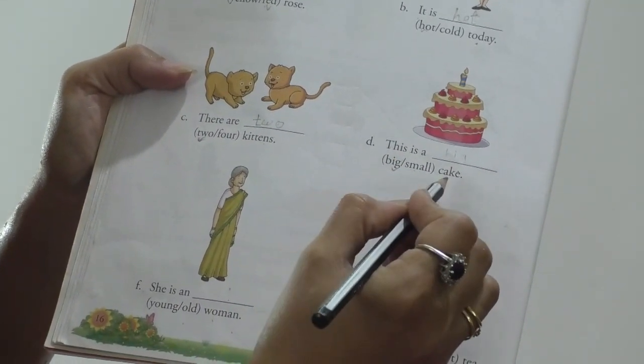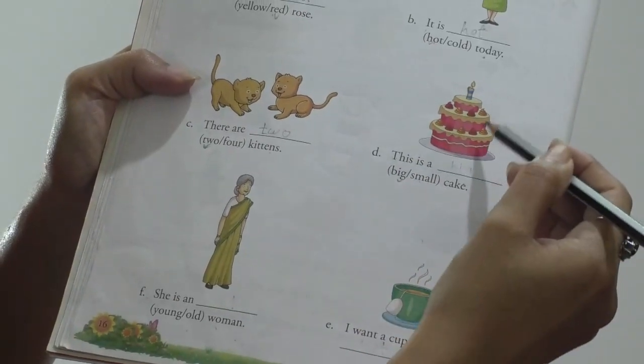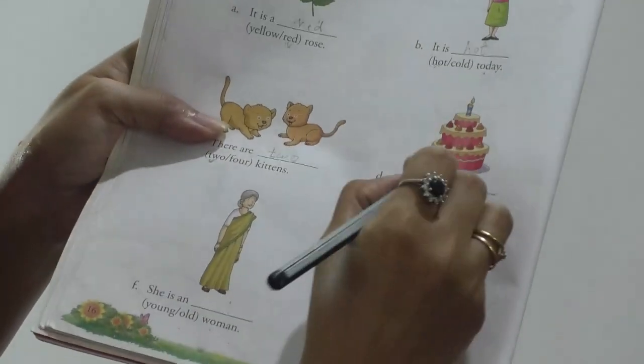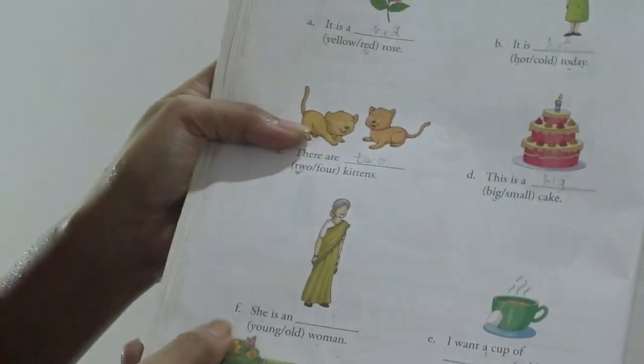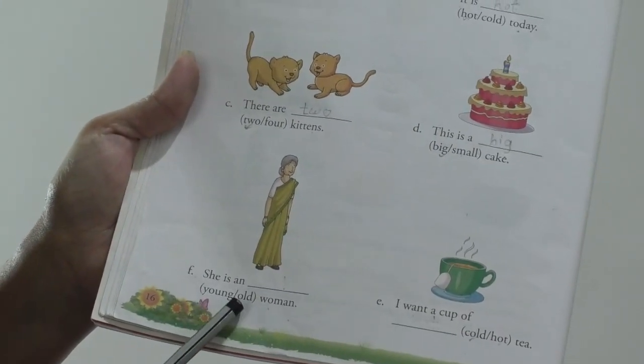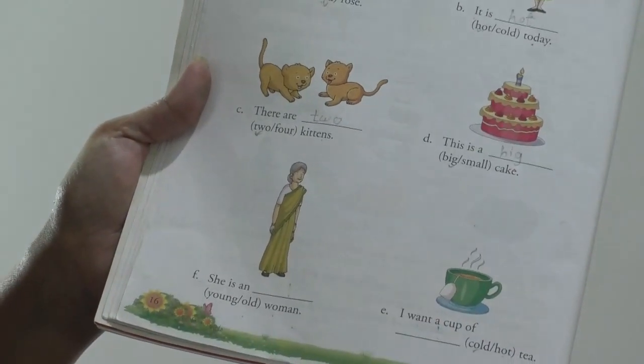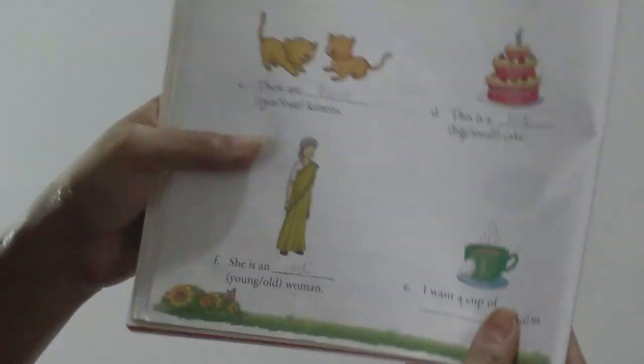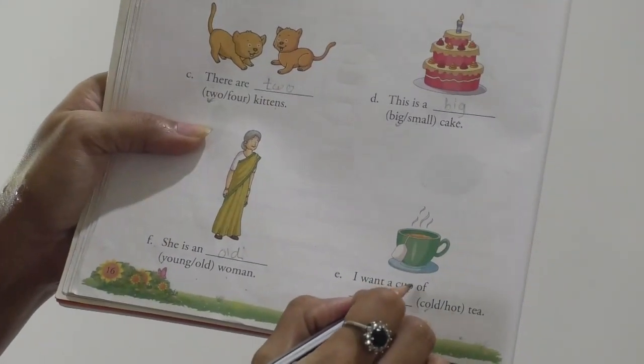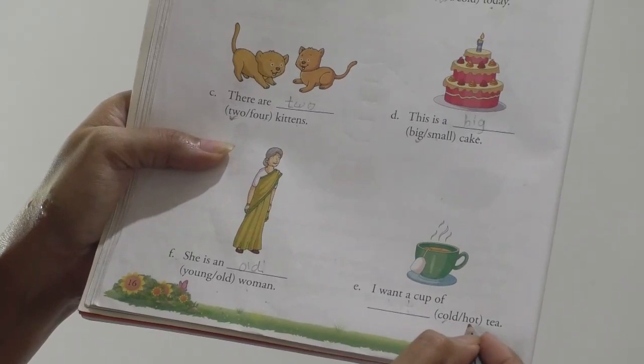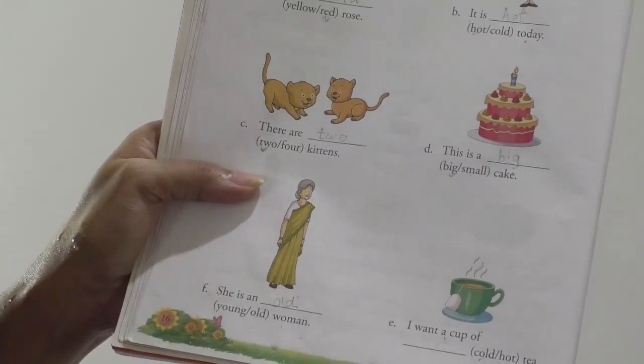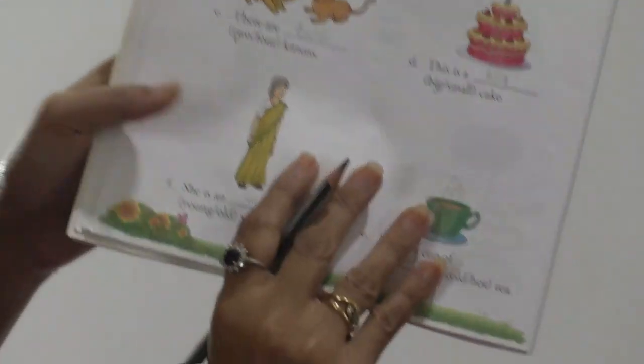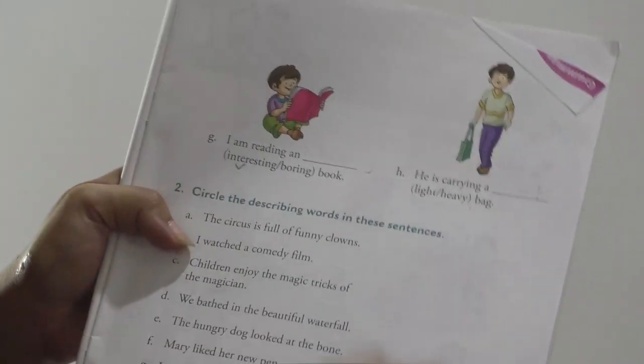Next, this is a dash cake. You can see the layers of the cake. Is it big or small? One, two, three. It is a big cake. Right here big. Next is she is a young or old woman. Is she young woman? No. She is old woman like a grandmother. Right here old. Next is I want a cup of dash cold or hot tea. You can see is it cold? No. It is hot tea. Right here hot. Now, turn your page. Page number 17. There are two last examples.